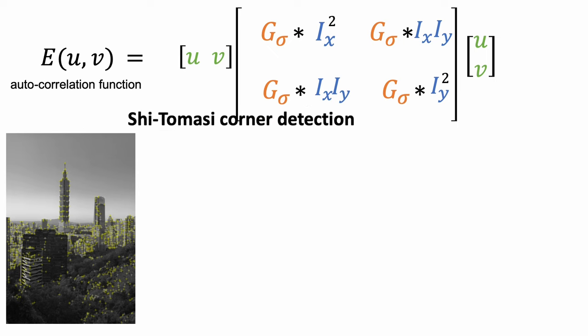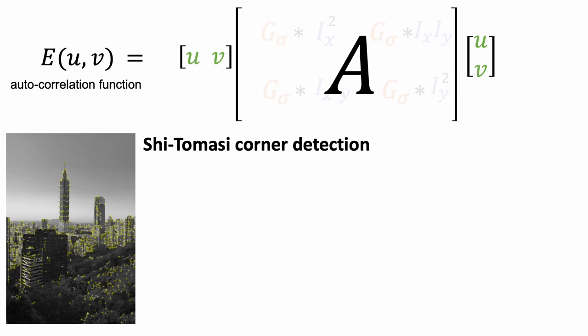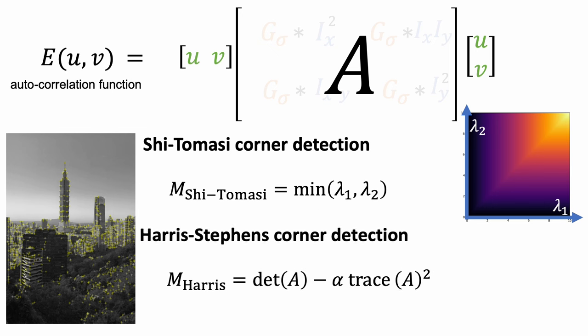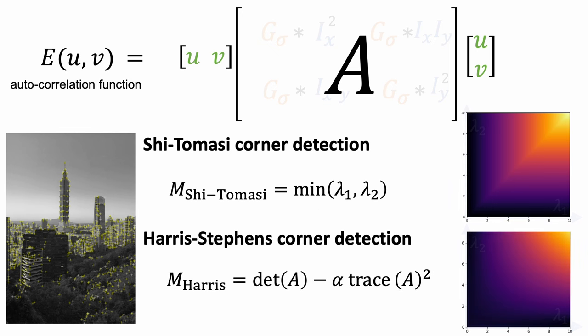This is the Shi-Tomasi corner detection algorithm. The criterion is the smallest eigenvalues. But computing the exact eigenvalues is expensive because it requires the computation of a square root. Harris-Stephens corner detection algorithm suggests an alternative by just using the determinant and the trace. This criterion provides a good approximation while being more efficient to compute.